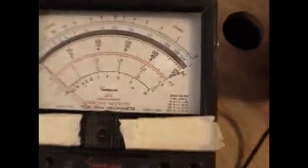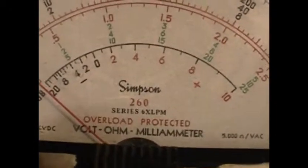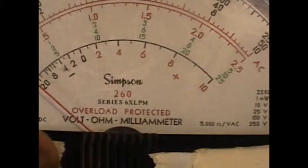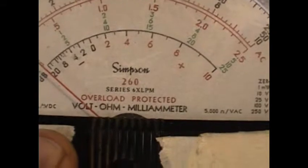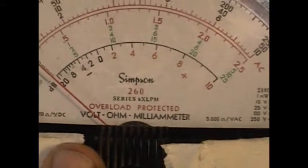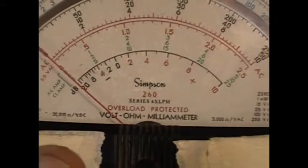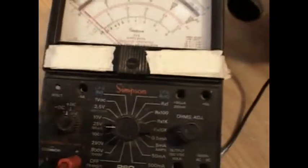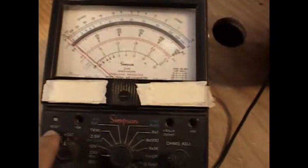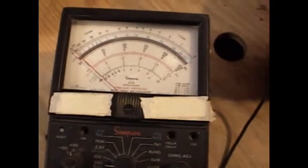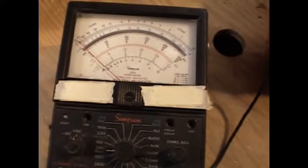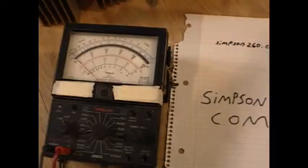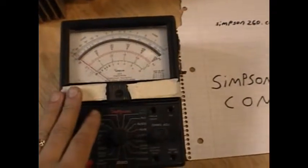The overload protection on this particular model. And once again, here if you look closely, you see series 6 XL PM. The key letter there that you should pay attention to is the P for protected. They have older models that are not protected. So the same measurements would have burned up one of the resistors in here, one of the low setting resistors. And that could change the whole measurement device, miscalibrating it, and you would have to have it replaced.